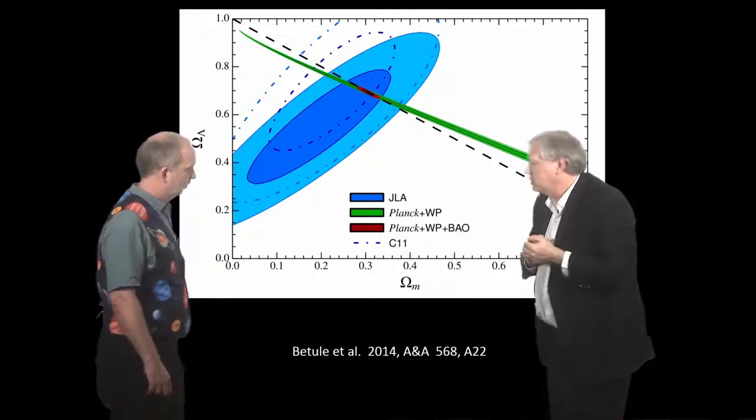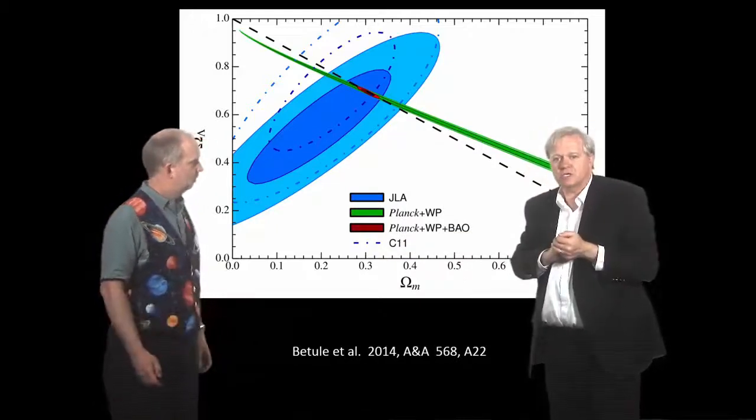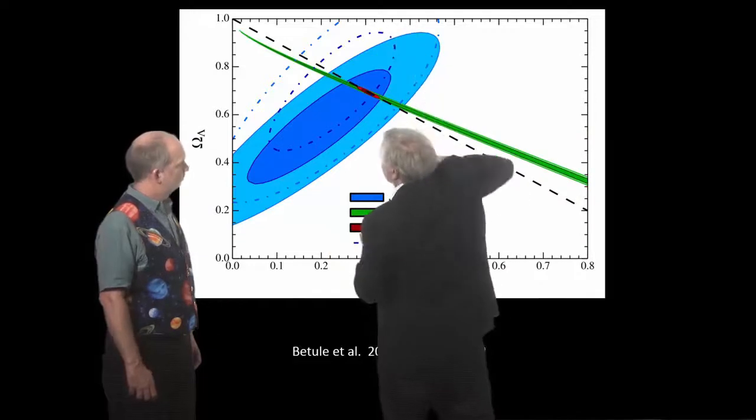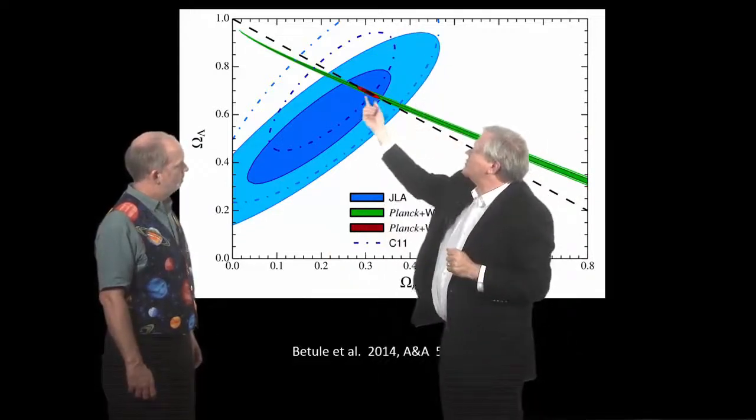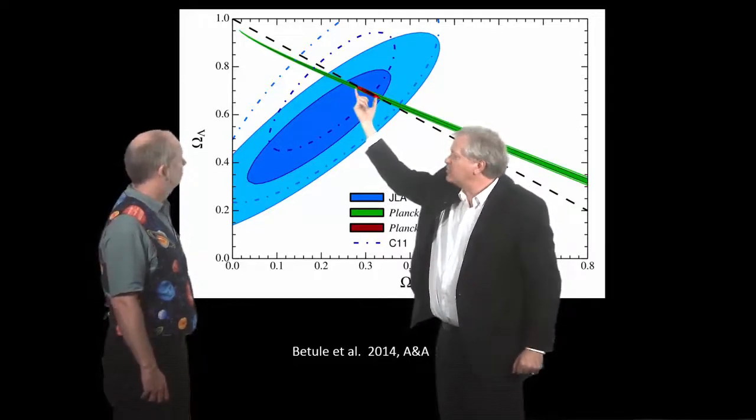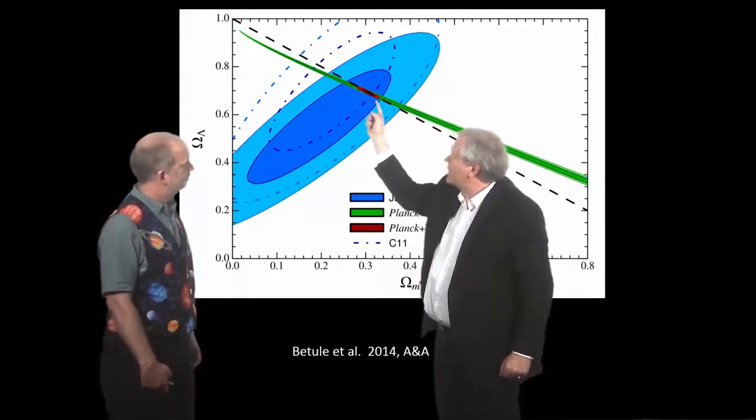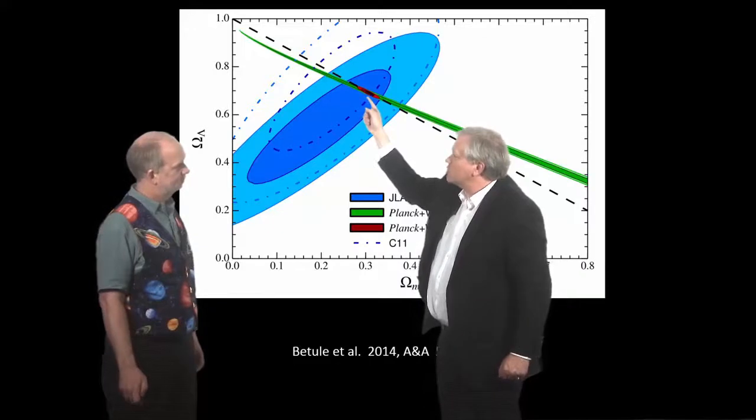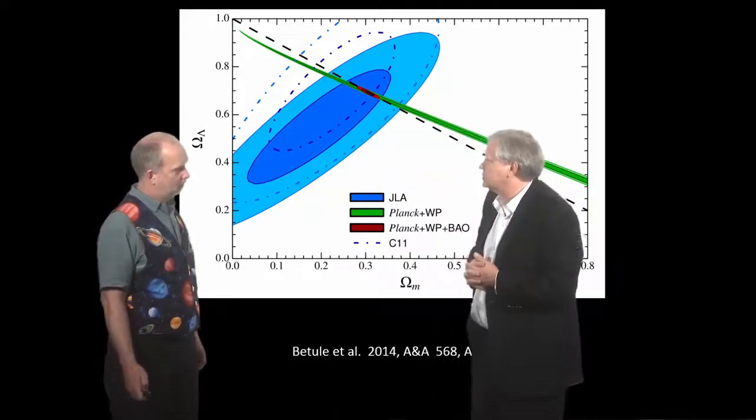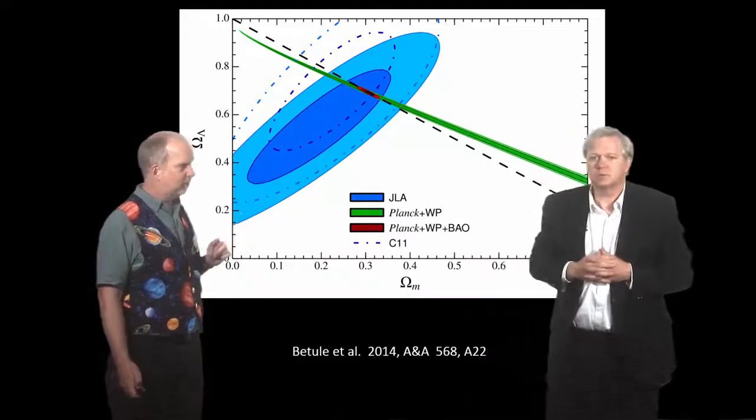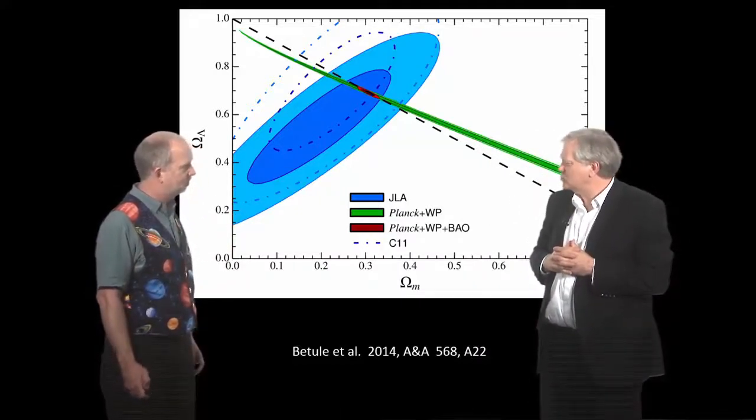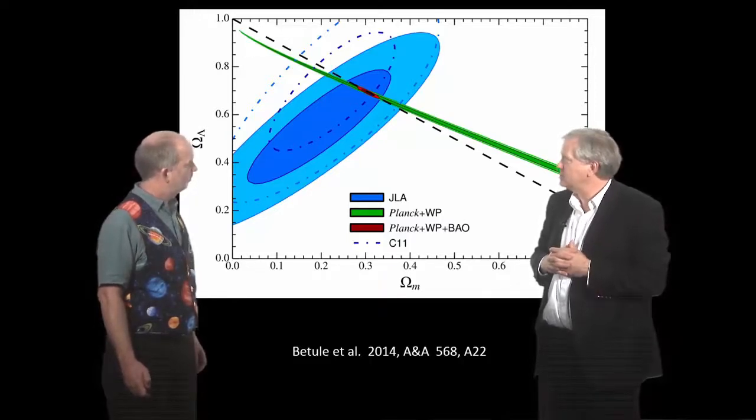On top of that, we also have the baryon acoustic oscillation measurements, which turn out to be something sort of in this direction. And when we add those together, we get this tiny little area where everything's consistent together. And so we're able to zero in to a very precise value of omega matter and omega lambda, it turns out. No one of the surveys by itself would be able to do that. It's only been a combination of them that you can get this very precise constraint. That's true. And so that makes it very useful.